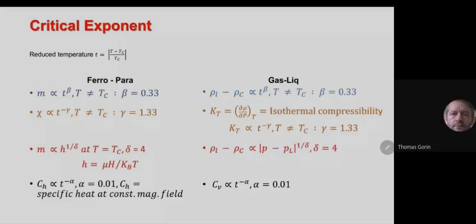According to the historical development, what people first noticed and what surprised them was that there are critical exponents close to the critical point, and the values of these critical exponents are universal. It was not obvious that going from phase A to B and from B to A would give the same critical exponent. There is an example — the Kosterlitz-Thouless phase transition — where it is not the case, and that's why it was originally called a 3/2 order phase transition.